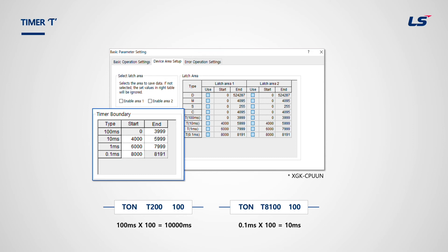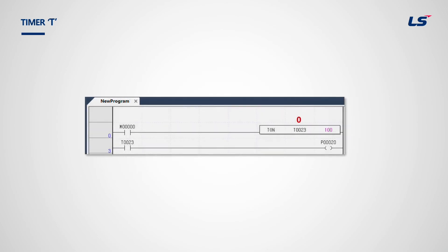For example, T8100 lies between T8000 and T8191 on the last row, so that timer has a value of 0.1 milliseconds. In the ladder program example, when M0 bit is on, the timer-on function starts. T23 timer has a value of 100 milliseconds, and because the function is set as 100, it means 10 seconds. After 10 seconds, T23 will reach 100, turning the T23 bit on, and therefore P20 output is on.